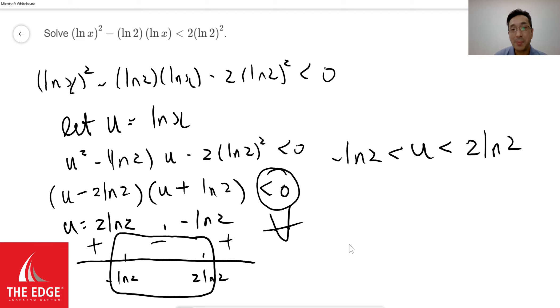Then we go back and remember what we know about logarithm. For example, negative ln of 2 can actually be written as ln of 2 to the negative 1. At the same time, remember that u was actually supposed to be just ln of x, so let's go back and put ln of x here. Similarly, instead of writing 2 ln of 2, I'm going to put 2 back as a power, so I get ln of 2 squared.